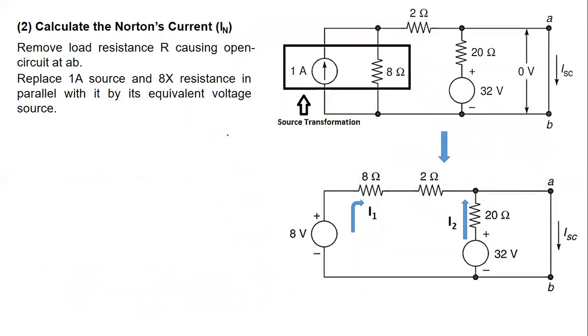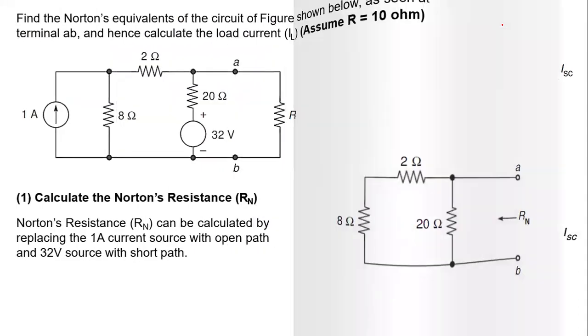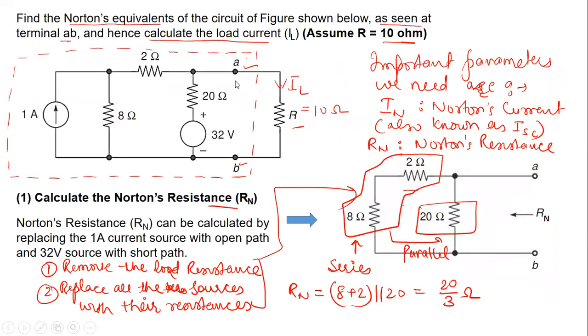Now, the second parameter that we need is the Norton's current. So how to find out the Norton's current? So here, this is kind of a typo. So we will mention short-circuit here. So the first thing that we will do is we will replace the load resistance with the short path. Okay, the resistance given here. So because these are the A, B, the load terminals as given in the statement.